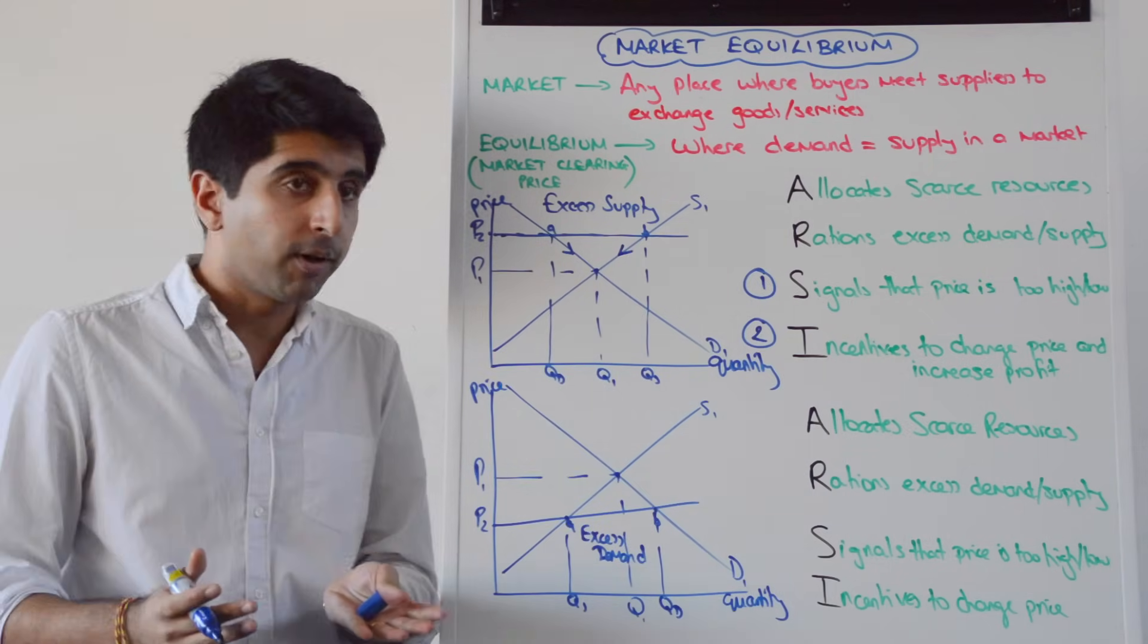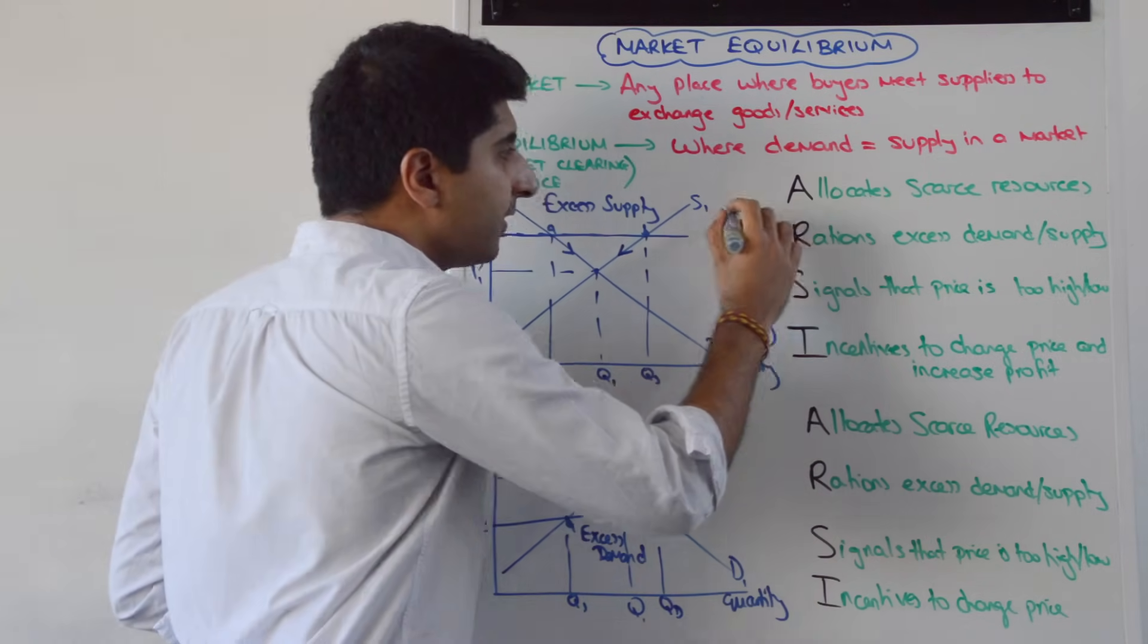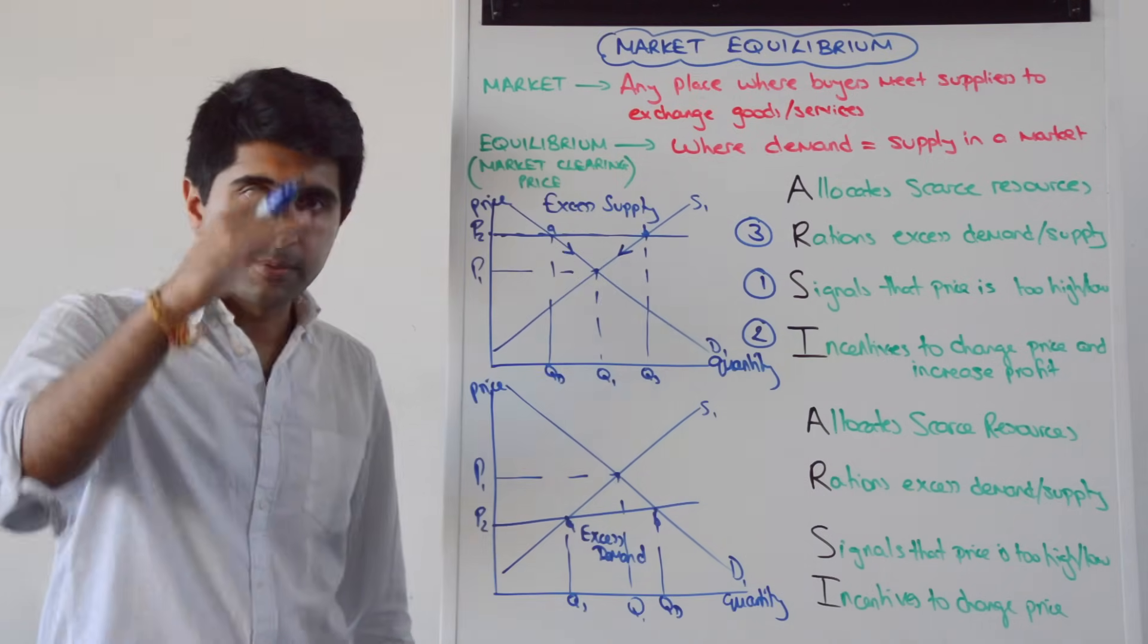And we get to P1 and a quantity of Q1. At P1 and Q1, we're back in equilibrium. And here there is no excess supply and no excess demand. We've rationed away the excess supply. That was the issue. Completely rationed by these movements as the price has been reduced.